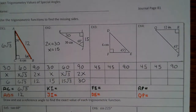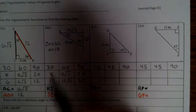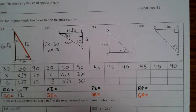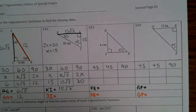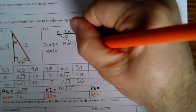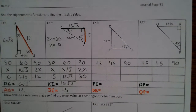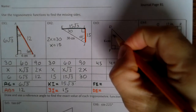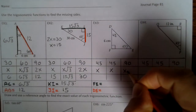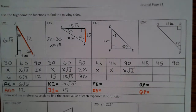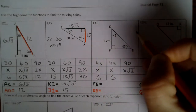So KI is 15 square root of 3, and JI is 15. Let's take a look at example 3. If this is 45 degrees and this is 45 degrees, we have a 45-45-90 triangle. We know that is x, x, x square root of 2. Since 6 is across from 45, x is 6. So FE is 6, and DE is 6 square root of 2.